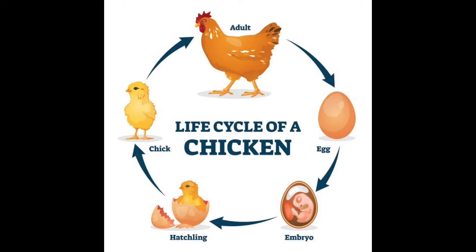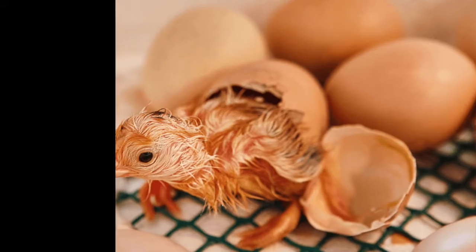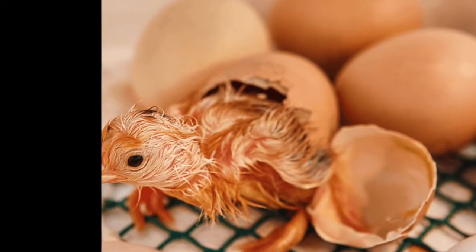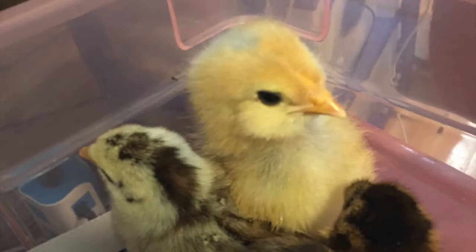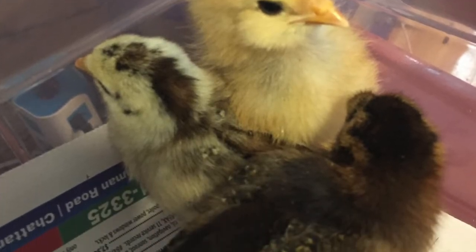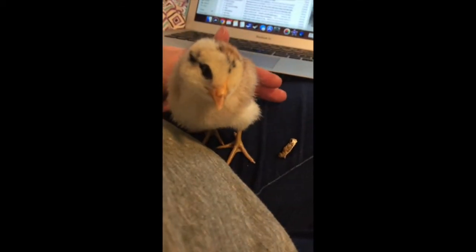The life cycle of a chicken begins when a chick comes out of an egg — this is called hatching. Most of the time, people will get their brand new chicks from a farm supply store or by mail. Here are some cute little chicks eating their food, a while after they've been out of the egg.